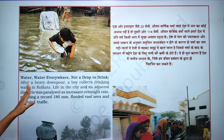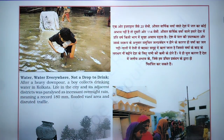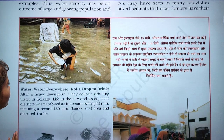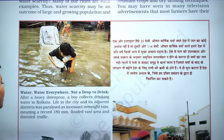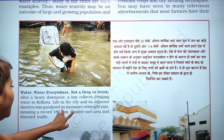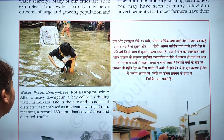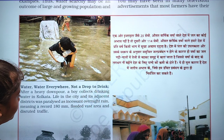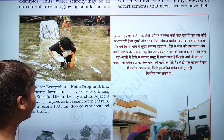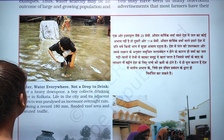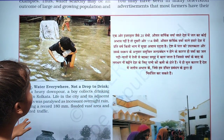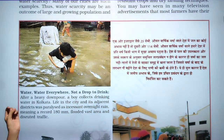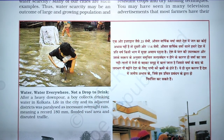Here in this chart is the story: 'Water, water everywhere but not a drop to drink.' After a heavy downpour, a boy collects drinking water in Kolkata. Life in the city and its adjacent districts was paralyzed by the overnight rain — water is everywhere but there is not a drop of water to drink.